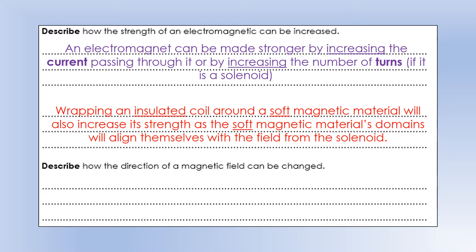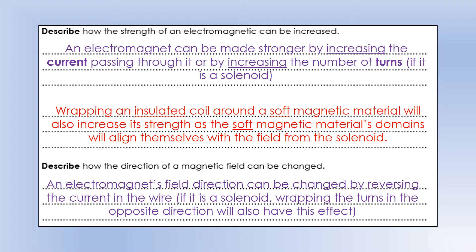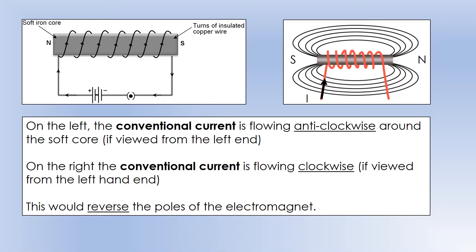How can we change the field direction, which is another advantage of an electromagnet? The easy way is to reverse the current - send it the other way through the wire. Also, if it's a solenoid, wrapping the turns in the opposite direction (anti-clockwise instead of clockwise) would also change the field direction. If viewing from the left-hand side, the current going anti-clockwise means you're at the north pole, whereas clockwise means you're at the south pole. So wrapping the wire the opposite way around the core reverses the poles of the electromagnet.